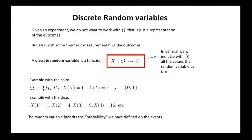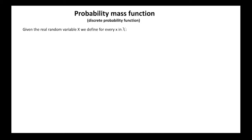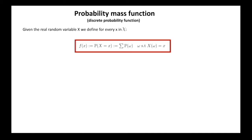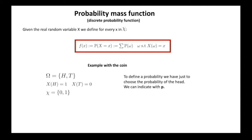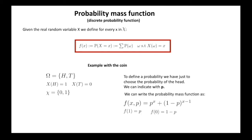It is natural that the random variable will also inherit a probability. Given a real random variable, we can define a function called the probability mass function. For every value x that my random variable can assume, we define f(x) to be the sum of the probability of all outcomes whose image through the random variable equals x. In the example of the coin, the values are 0 and 1. If we indicate with p the probability of getting heads, then f(1) equals p and f(0) equals 1 minus p. From now on, we can forget about the sample space and just work with the random variable, the probability mass function, and the set of possible values.